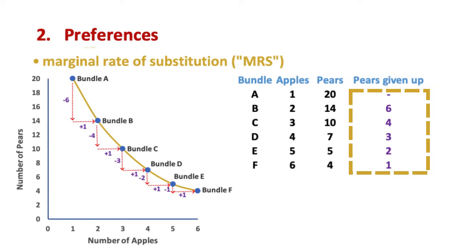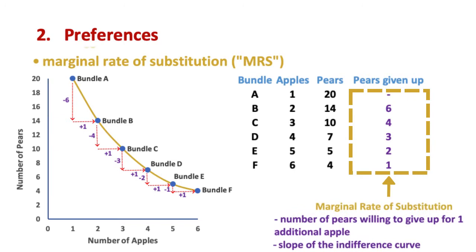The marginal rate of substitution, or MRS, is the number of pears we are willing to give up for one additional apple. It is represented by the slope of the indifference curve. At low levels of apples, the slope is steep, and therefore the MRS is high. As apples increase, the slope gets flatter, which means the MRS is lower.